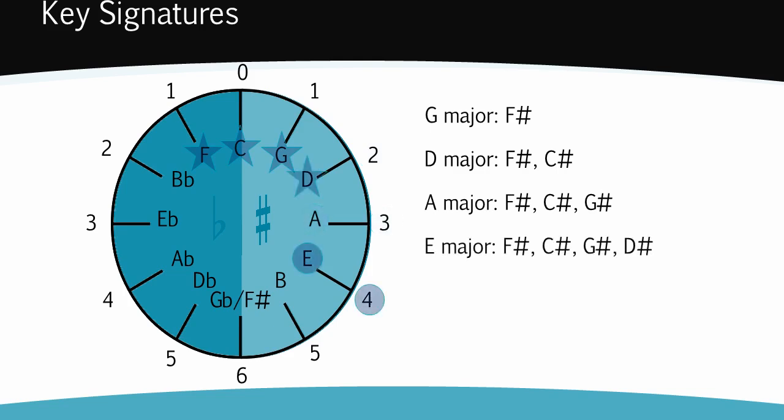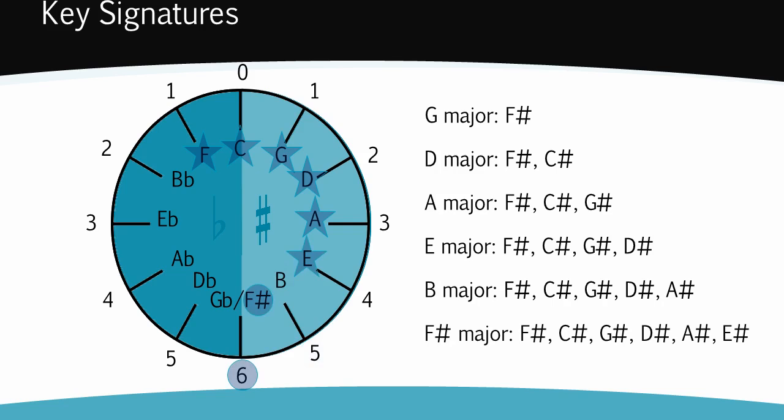E major has F sharp, C sharp, G sharp and D sharp. The order of sharps also follows the circle of fifths. Can you work out the sharps and their order for F sharp major? They are F sharp, C sharp, G sharp, D sharp, A sharp and E sharp.